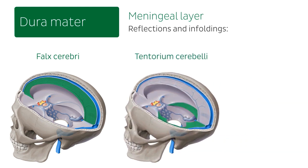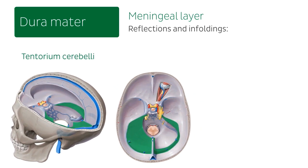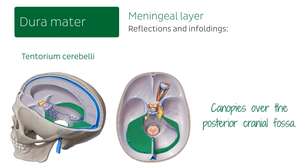We also have the tentorium cerebelli, highlighted here, which is also visible in this image of the base of the skull. This is the part of the dural sheet that spreads out between the ridges of the petrous part of the temporal bone and the transverse sinus, separating the cerebellum and brain stem from the occipital lobes. It can be said that the tentorium cerebelli canopies over the posterior cranial fossa, covering the cerebellum like a tent — which is the reason it is called the tentorium.